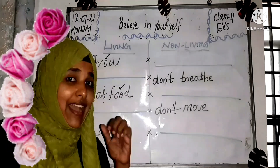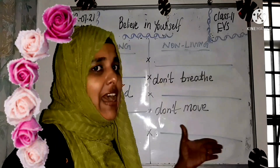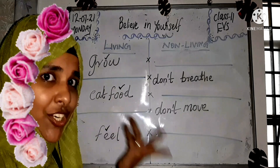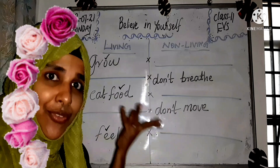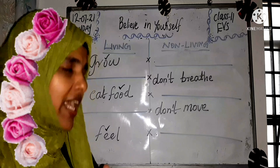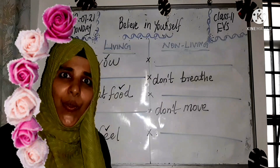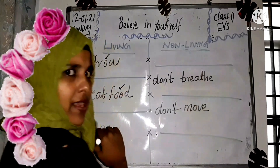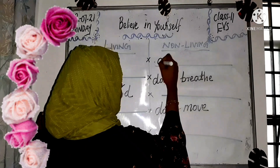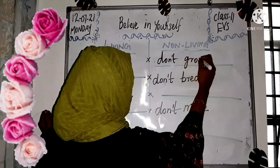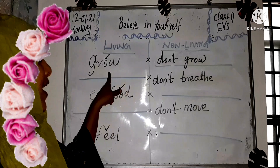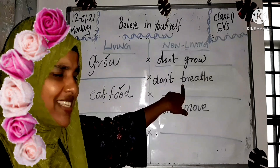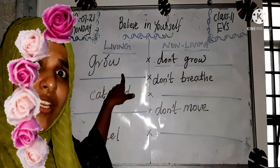I will give some clues and after class you should complete it. First: living things can grow — what about non-living things? They do not grow. So you should write 'do not grow' here. Second, I've given that non-living things do not breathe, so what will come for living things? Yes — living things can breathe.